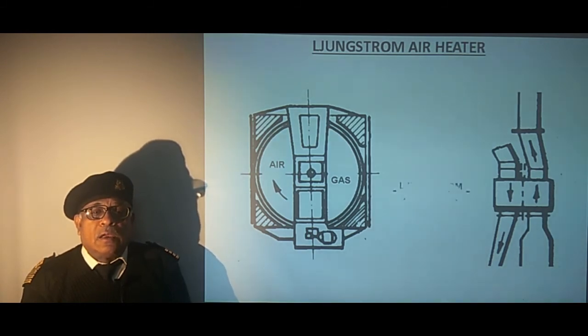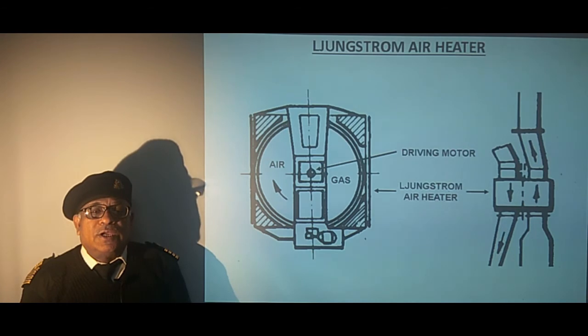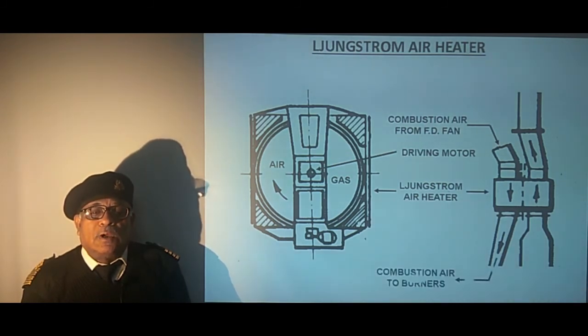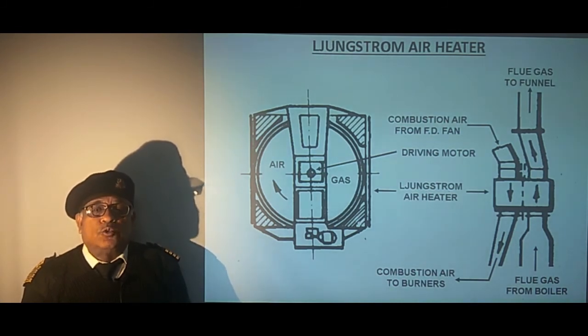So we can see this is known as Ljungstrom air heater and this is the driving motor which is shown which drive the rotor. And on either side of the center line we have gas and air passages as we can see on the right side. This is the combustion air from FD fan and it goes to the burners. Similarly the flue gas from the boiler passes to the heater and after heating the incoming combustion air it leaves the air heater and passes to the funnel.